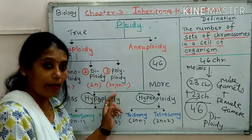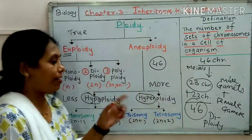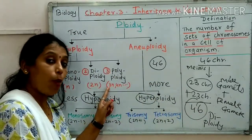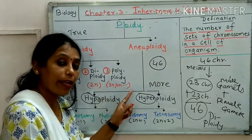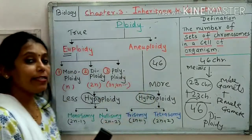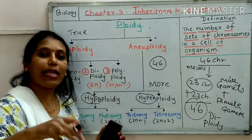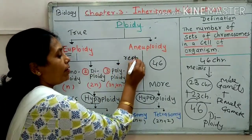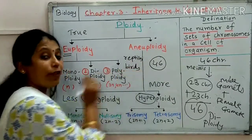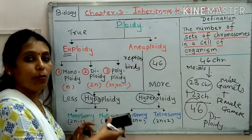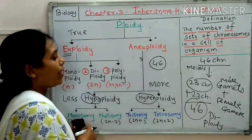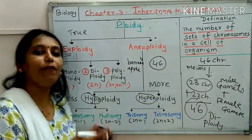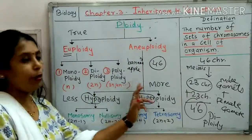Then polyploidy — here more than two sets are present. Three times sets are present: that is triploidy. Four times: tetraploidy. Five times: pentaploidy, and so on. Polyploidy means if more than two sets are present, then it is called polyploidy. In case of reptiles and birds you will get such chromosomal numbers. In case of plants, for example banana and apple, you will get more sets of chromosomes. This is all about euploidy — it is the normal condition.